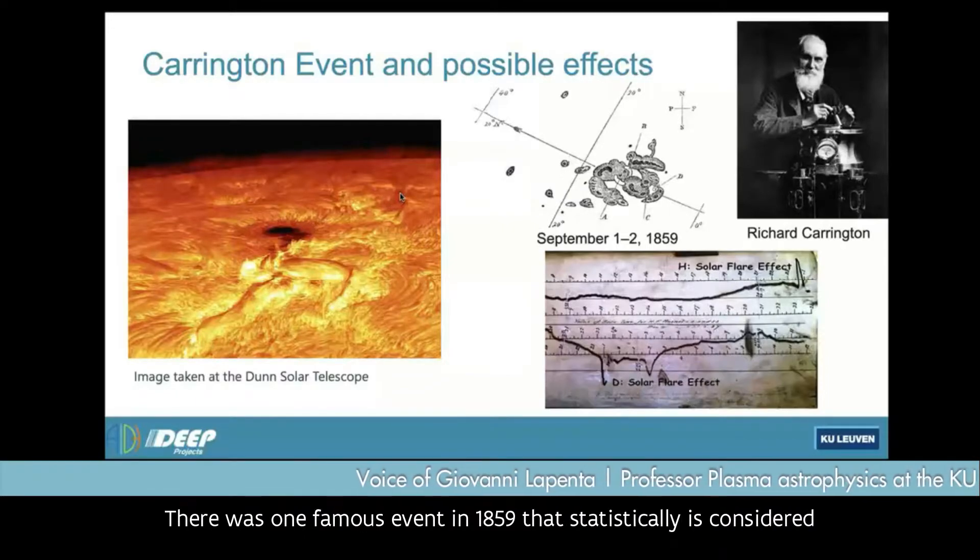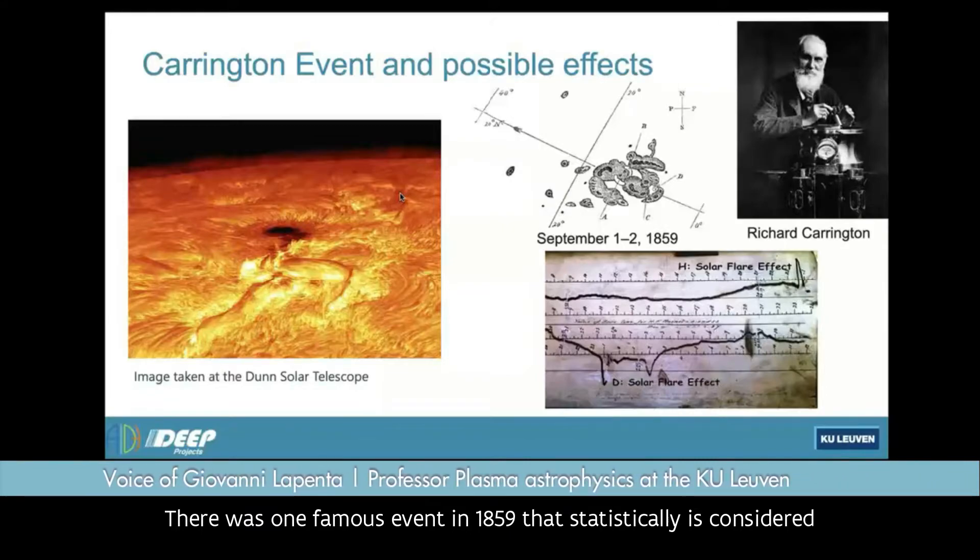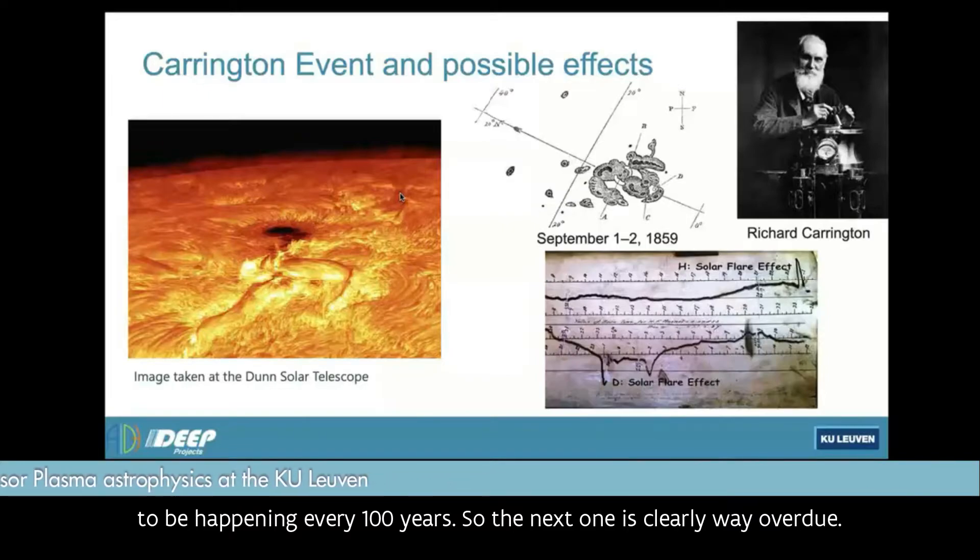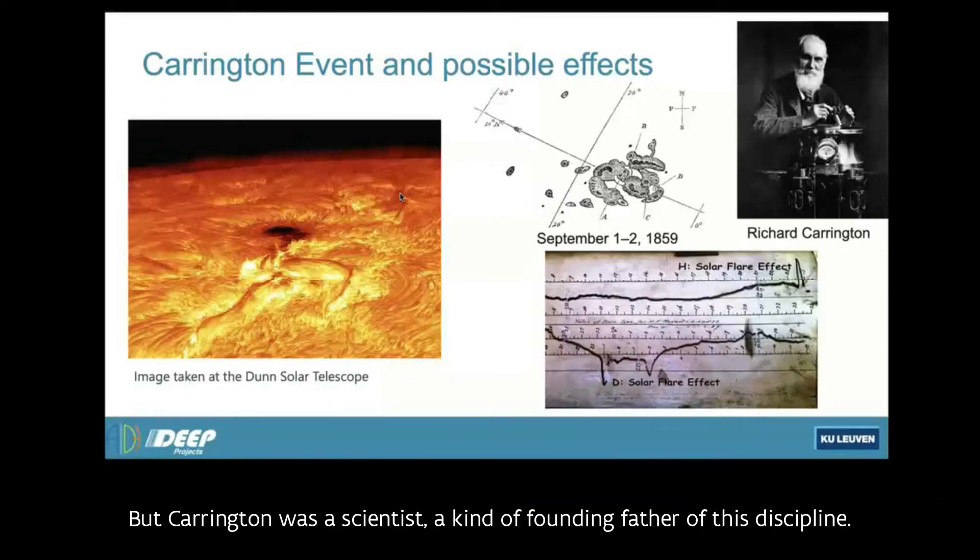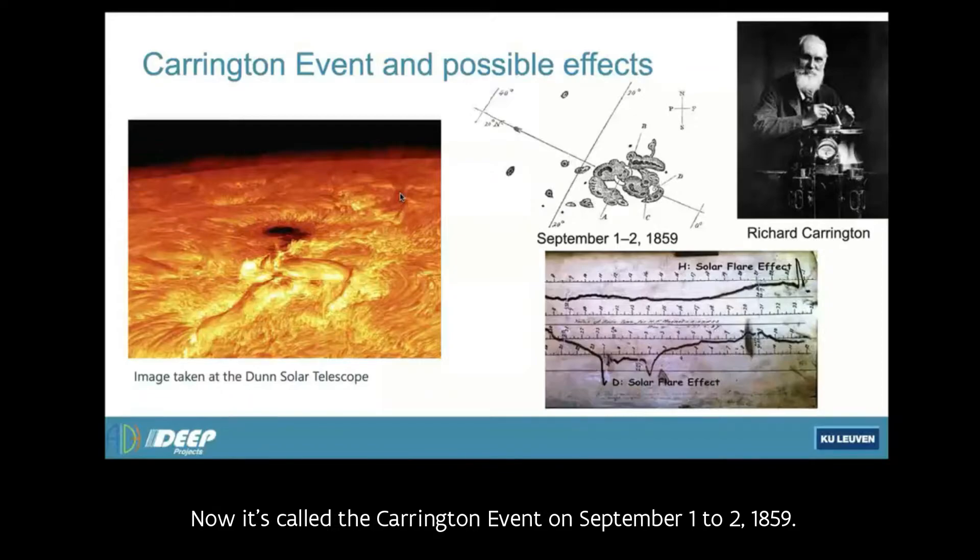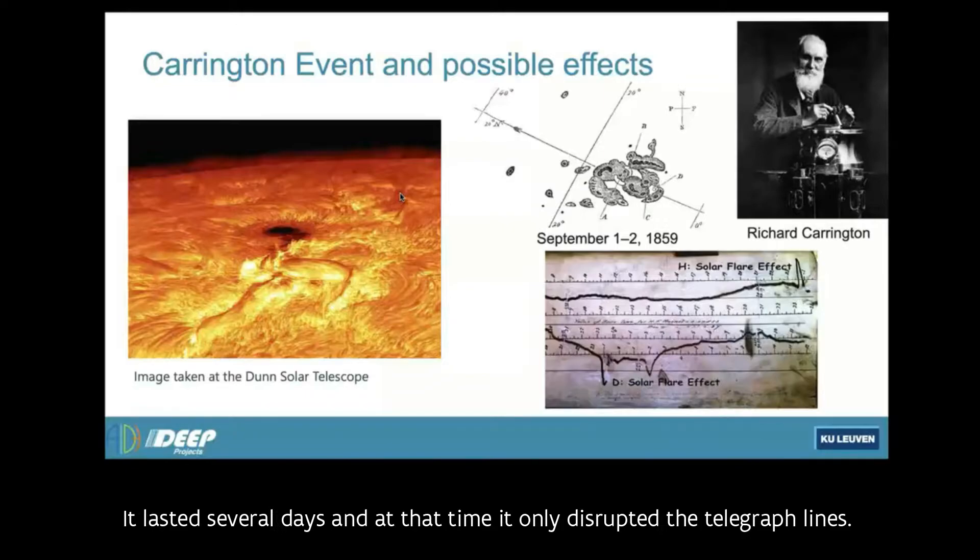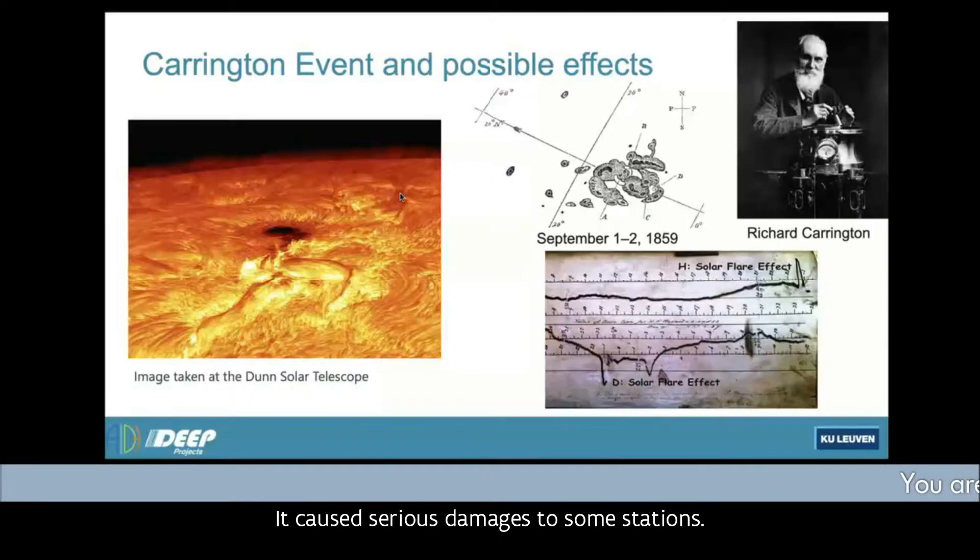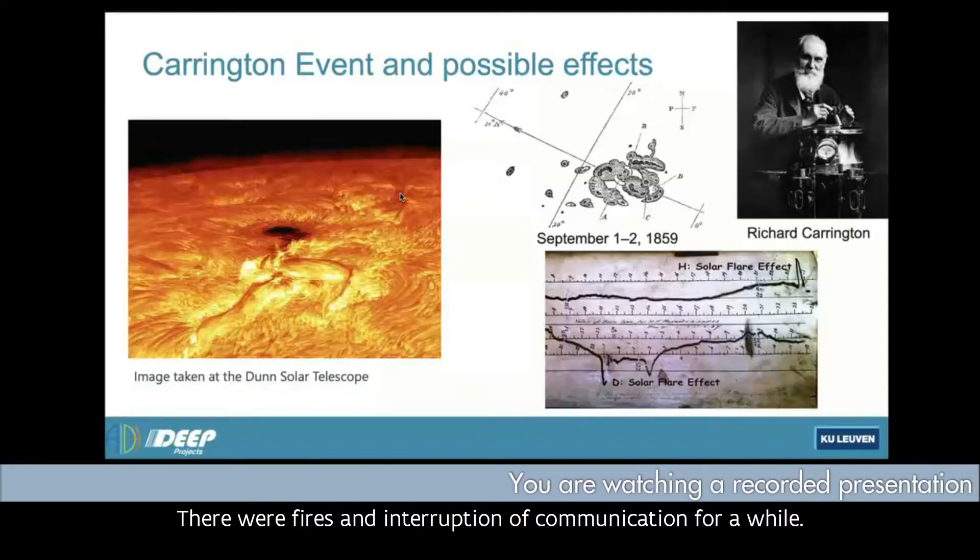There was one famous event in 1859 that statistically is considered to be happening every hundred years. So the next one is clearly well overdue. Carrington was a scientist, founding father of this discipline, that was already observing the sun then. He observed this major storm, now called the Carrington event, September 1 to 1859. It lasted several days. At that time it only disrupted the telegraph lines. It caused serious damages to some stations. There were fires and interruption of communication for a while.